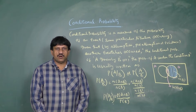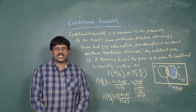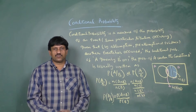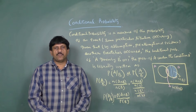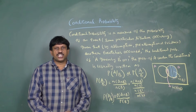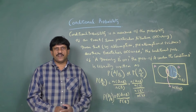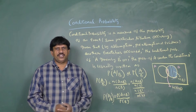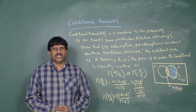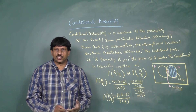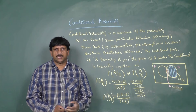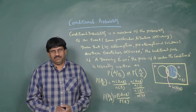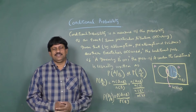Now we are going to discuss about conditional probability. This is one of the nice topics. Conditional probability is a measure of the probability of an event occurring in some particular situation, given that by assumption or pre-assumption or evidence, another event has occurred.